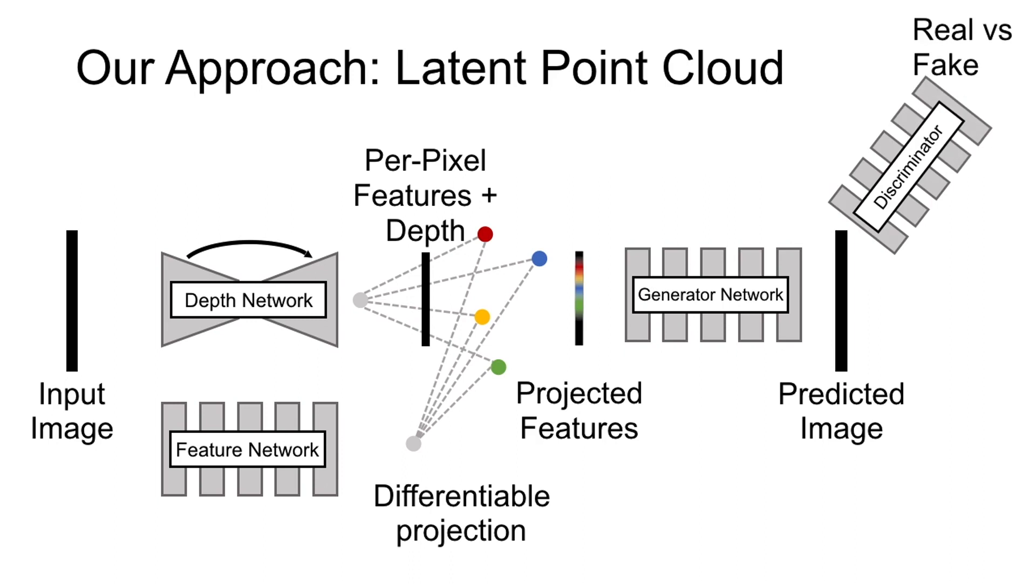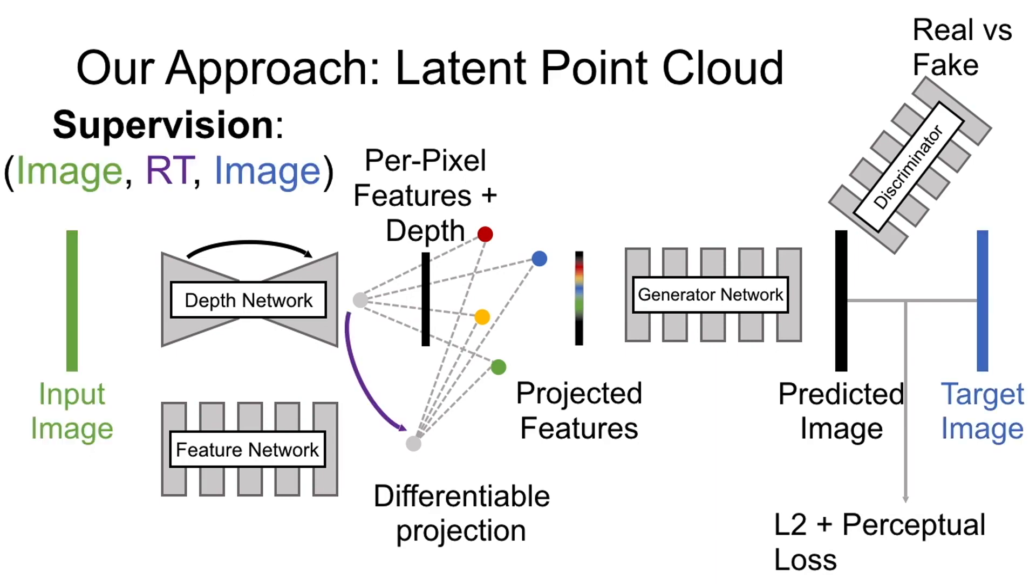We then apply a set of losses: a discriminator loss, an L2 loss, and a perceptual loss. At training time, the supervision is the input image, the rotation, translation, and the target image. No ground truth depth is used.